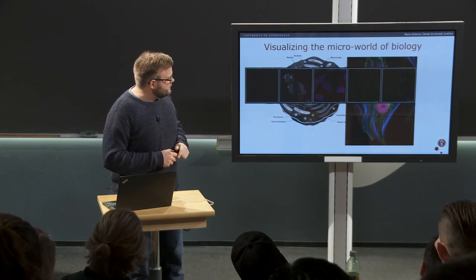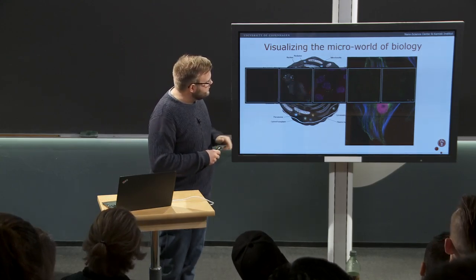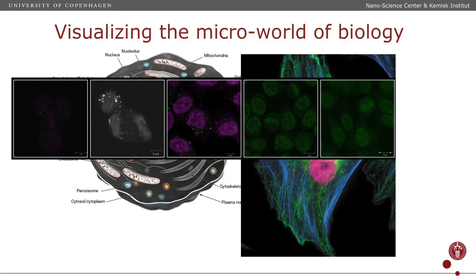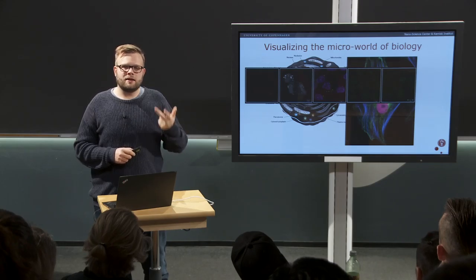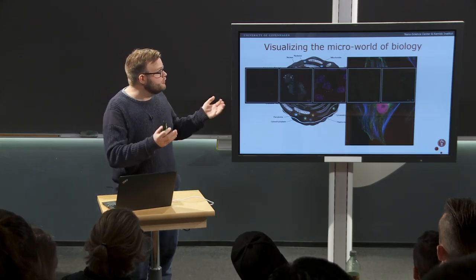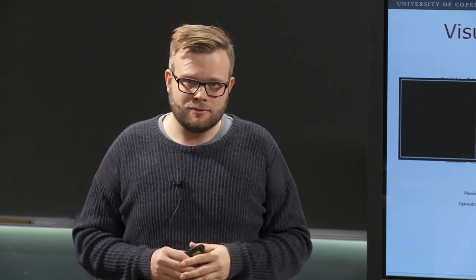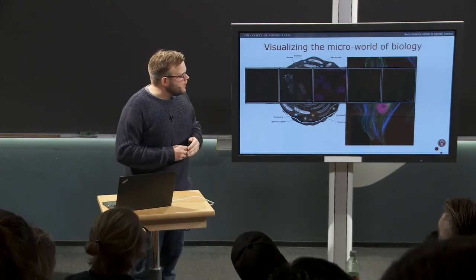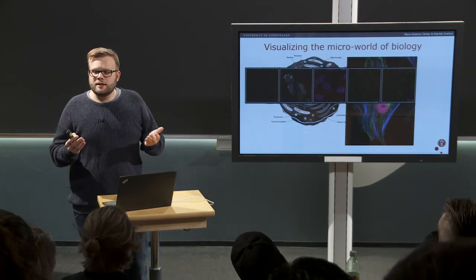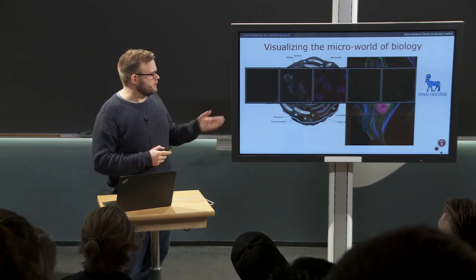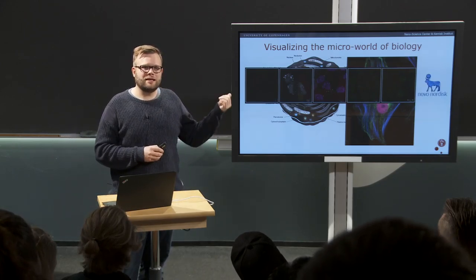So using my dyes — here a group of cells have been stained with five different of my dyes — we can see the nucleus. These images we can record once, twice, a thousand times. We can make a movie over days following the behavior of these cells. That is what my research has accomplished. And it is quite interesting — so interesting that the Danish company Novo Nordisk are now testing these dyes in their research and development.